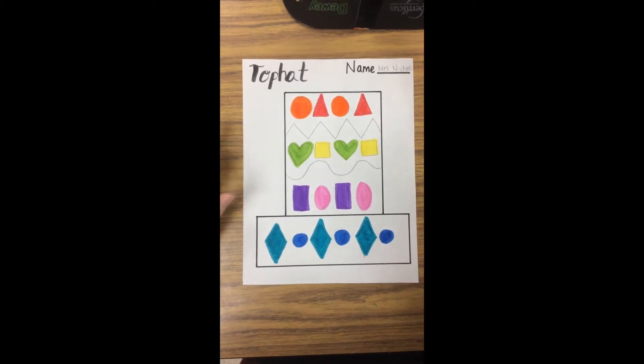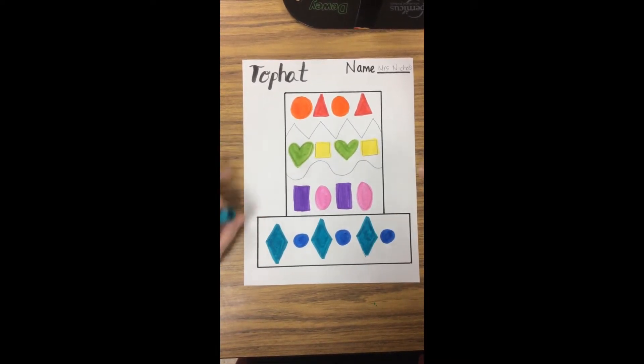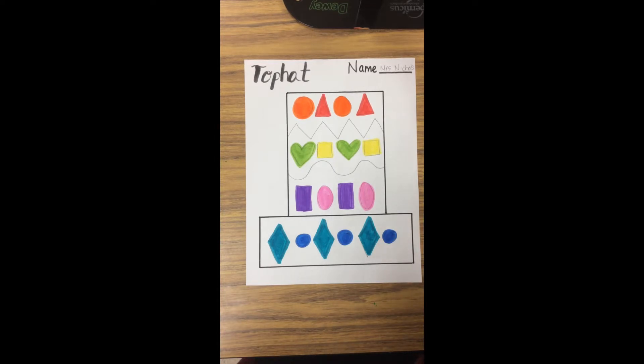Alright, once you've got your shapes colored in, you're now going to pick one, two, three, four different colors for the stripes on your hat.